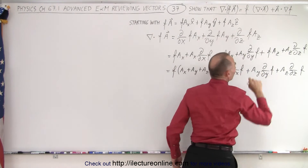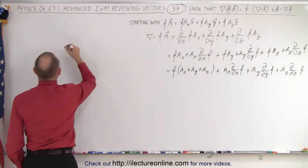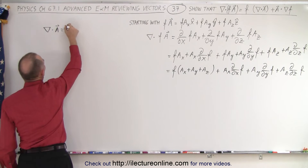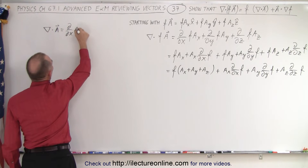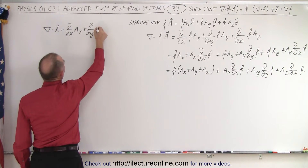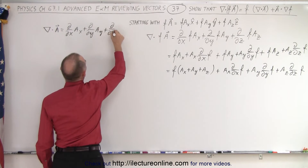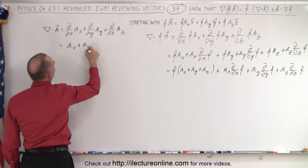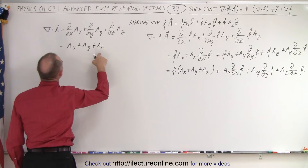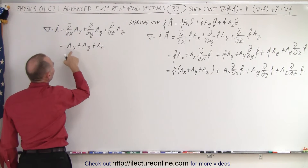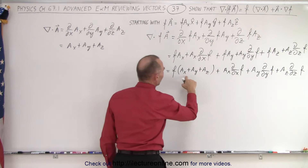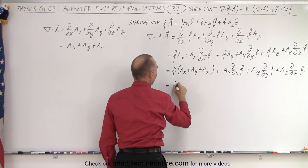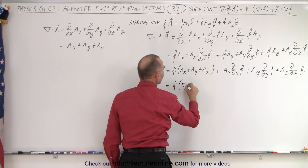Now we can see that the first portion is f times A sub x plus A sub y plus A sub z. Is that equal to the divergence of A? If we take the divergence of A, it equals the partial with respect to x of A sub x, plus the partial with respect to y of A sub y, plus the partial with respect to z of A sub z, which equals A sub x plus A sub y plus A sub z. So the divergence of A equals the sum of the components of A, and multiplying by f gives f times the divergence of A.